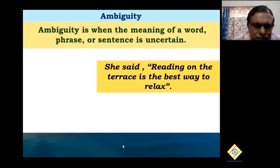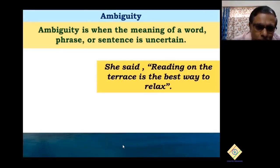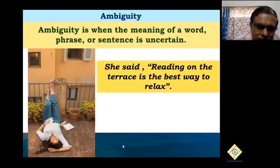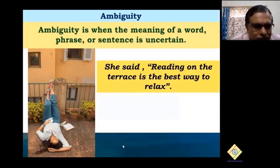Just look at this sentence: 'Reading on the terrace is the best way to relax.' It looks so simple. I hope you can imagine someone sitting and reading on a terrace — am I right? But actually, that person was referring to something else entirely. What was said is ambiguous; it doesn't mean what you see in your mind's eye. They're two different things — the sentence is slightly ambiguous.